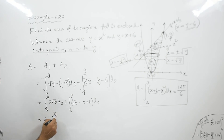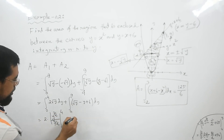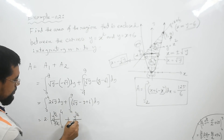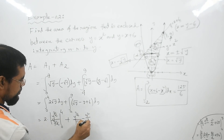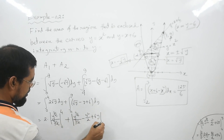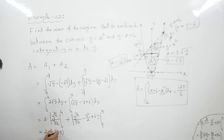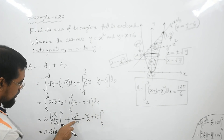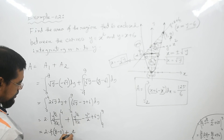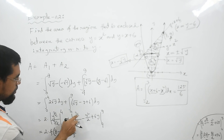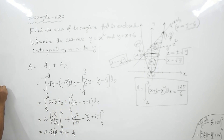The full integral is: integral from 0 to 4 of 2 times root y dy, plus integral from 4 to 9 of (root y minus y plus 6) dy. For A1: integral of y to the power 1/2 gives y to the power 3/2 divided by 3/2, evaluated from 0 to 4. This equals (2/3) times 4 to the power 3/2. Since 4 to the power 3/2 equals 8, A1 equals 16/3.